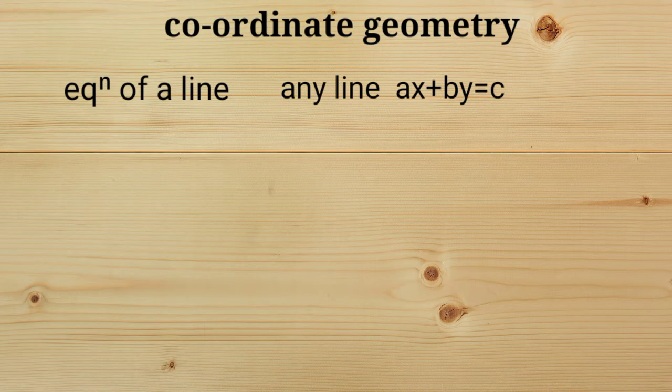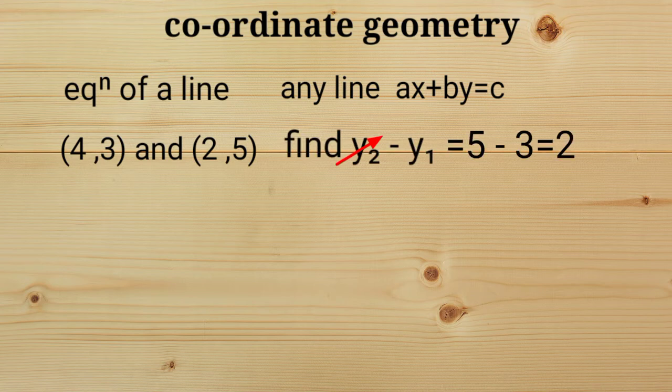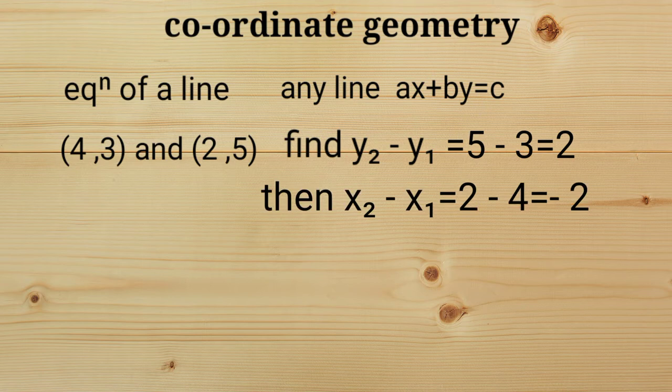Let two points are given as (4,3) and (2,5). First find y2 minus y1 equals 5 minus 3 equals 2. Then x2 minus x1 equals 2 minus 4 equals minus 2.